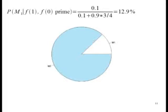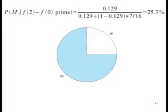Then I use the fact that f of 1 is also prime, and now I get 12.9%. And I can step through this sequentially. F of 2 to f of 0 is prime yields a posterior probability of 25.3%, and I use this as a prior for the next measurement.